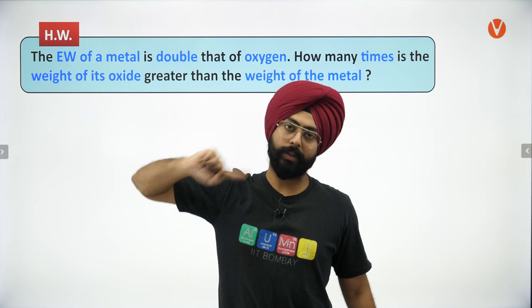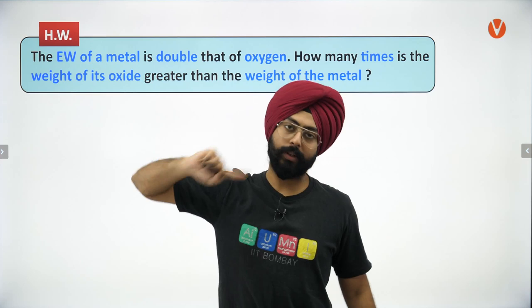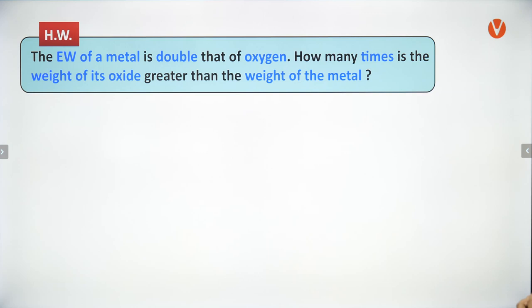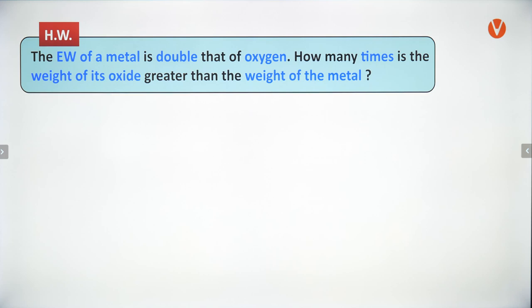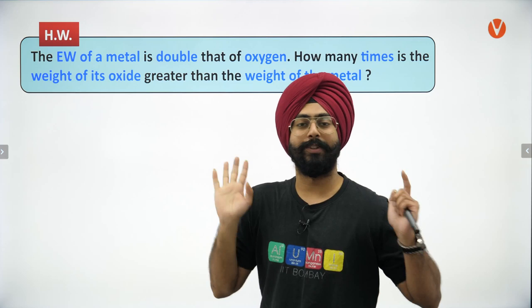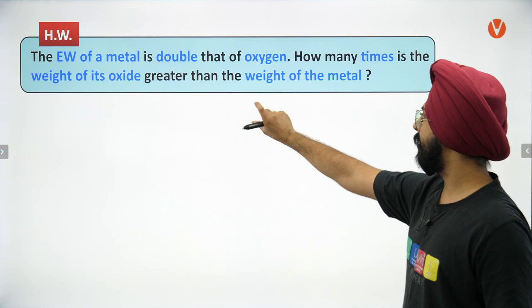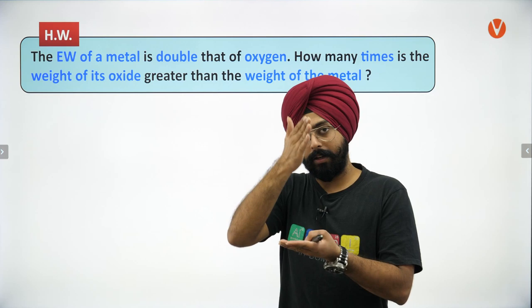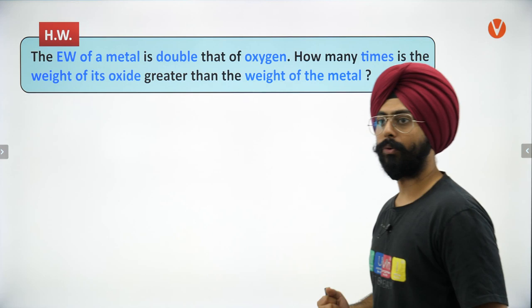Take a screenshot of the next question as homework. It's the same type of question but a little more complicated — it asks about the weight of the oxide being greater than the weight of the metal and asks for a ratio. Use the logic that the number of equivalents of reactants and products will be the same. Leave your answer in the comment section of this video.